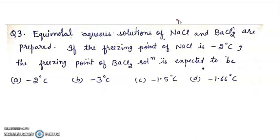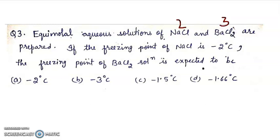NaCl ke liye i ki value 2 hogi, BaCl2 ke liye i ki value 3 hogi. So delta Tf is i Kf m. NaCl ke liye 2 into Kf m, BaCl2 ke liye 3 Kf m. Taking the ratio delta Tf1 upon delta Tf2 will be 2 by 3.